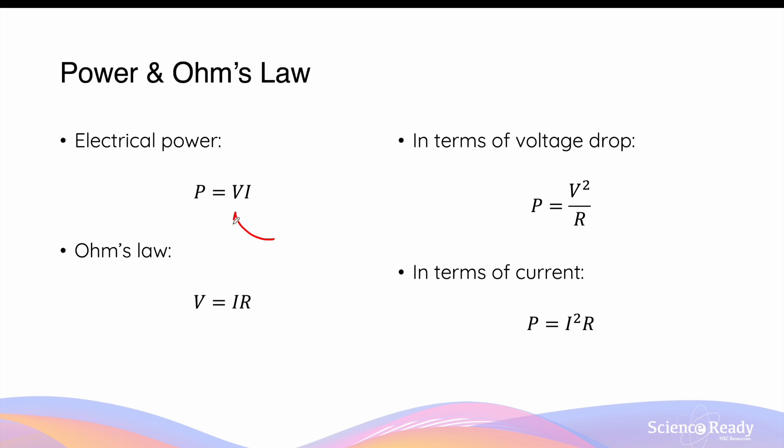Alternatively, we can substitute and replace voltage by I times R, in which case we will get an expression for power as I squared R. For this equation to calculate power, we simply need to know the total amount of current that's passing through a resistor, I, multiplied by the resistance of this component.